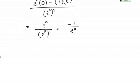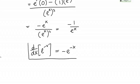Now what I can do to make this look a little bit more like the original form is actually move that e to the x back up into the numerator by making the exponent negative again. So in other words, this is equivalent to negative e to the negative x. So the derivative with respect to x of e to the negative x equals negative e to the negative x.